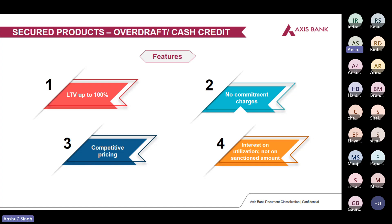For example, if I've given a customer a loan of 100 lakhs and the customer is only utilizing 70 lakhs, we'll charge the customer interest only for the 70 lakhs utilized and not for the entire 100 lakhs sanctioned.